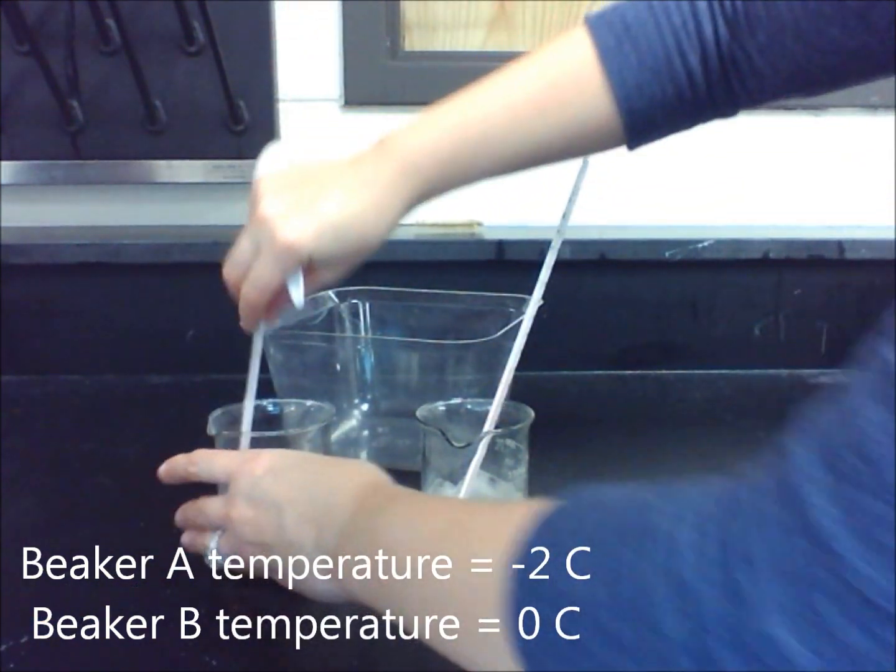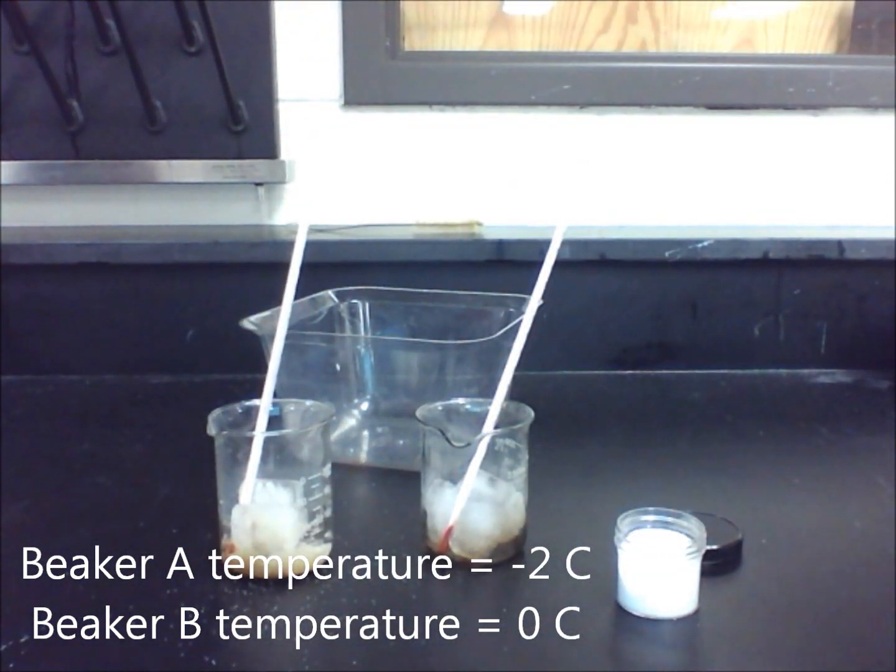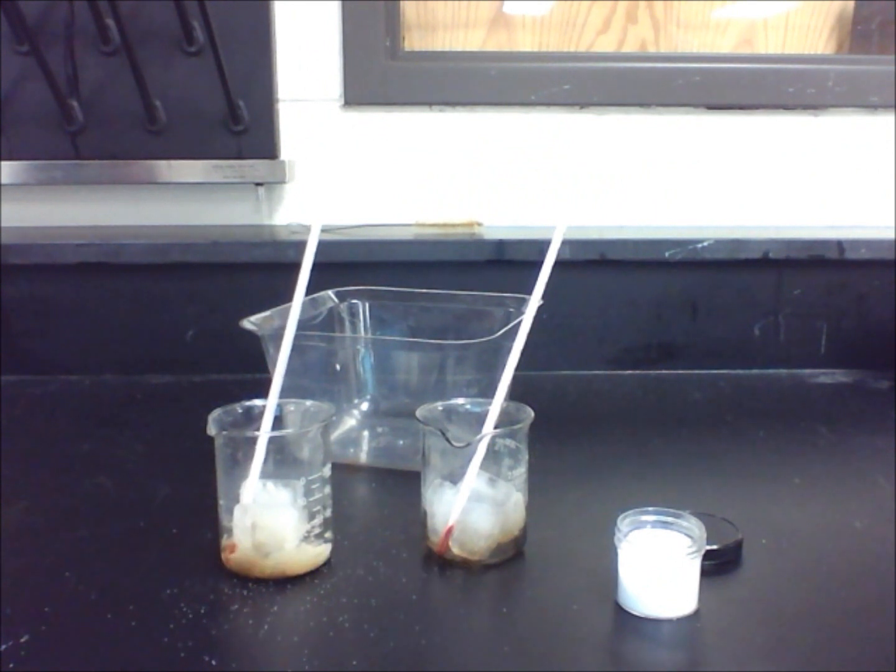Measure the temperature of the crushed ice in beaker A and beaker B. Record your results in table 1. You should have noticed that the temperature decreased significantly for beaker A.